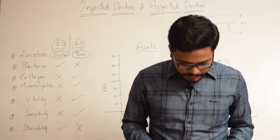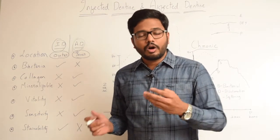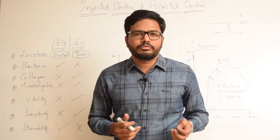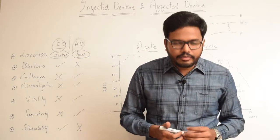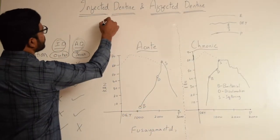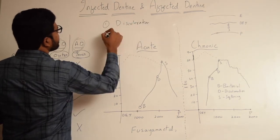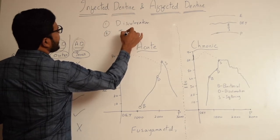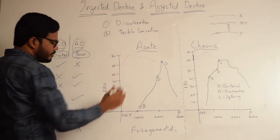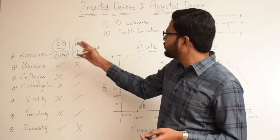After having understood this, coming to the second aspect of our class today: how relevant are these clinically and why do we need to understand these differences? From the clinical point of view, we usually identify the differences between infected and affected dentin based on two criteria: one is discoloration and the second one is tactile sensation. We use these two parameters in order to identify and differentiate infected dentin from affected dentin.